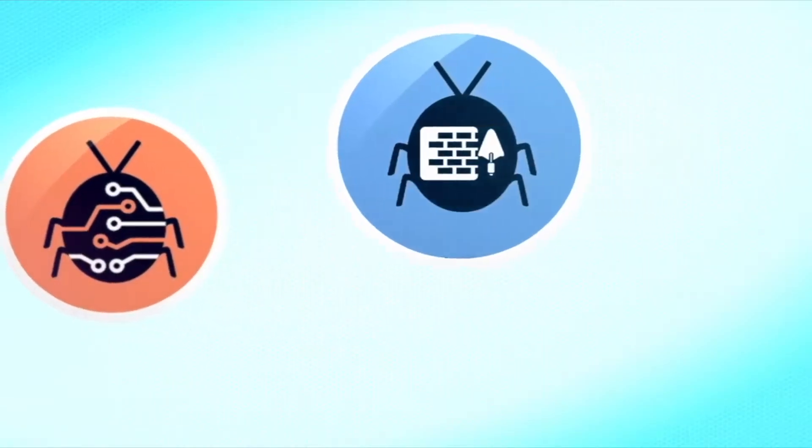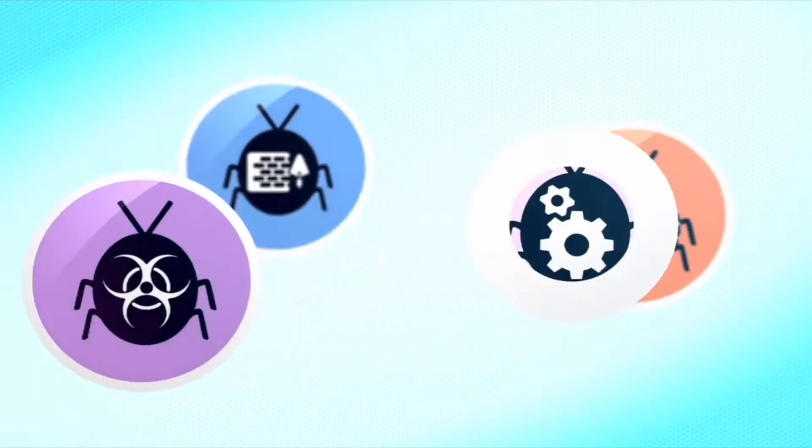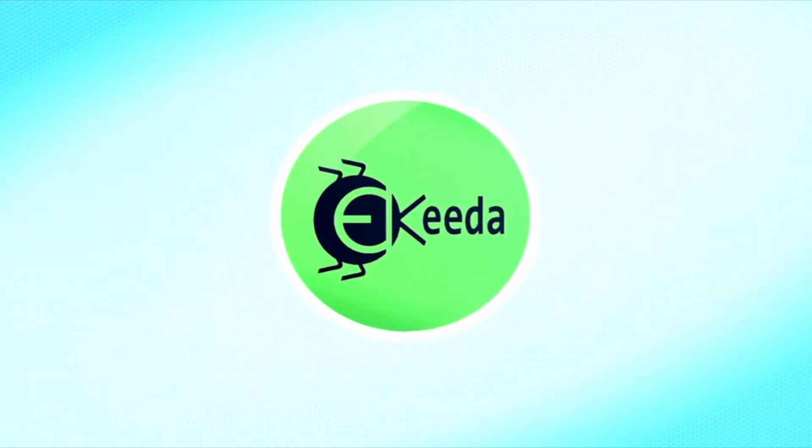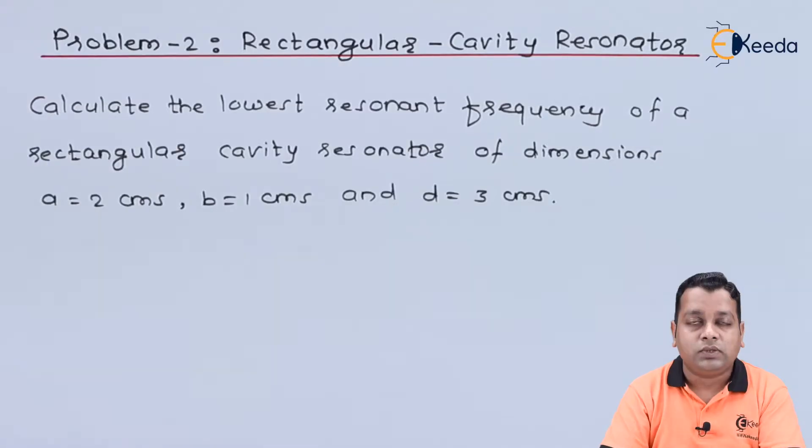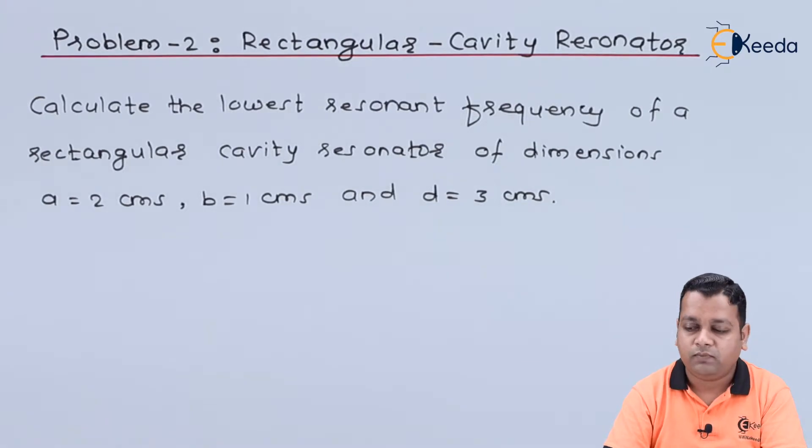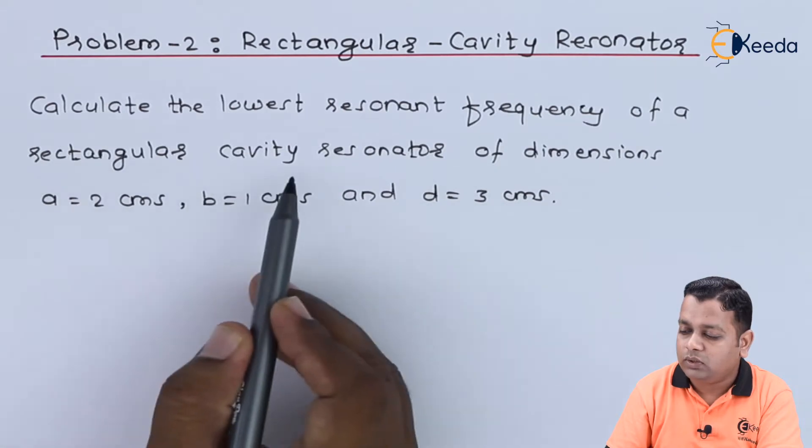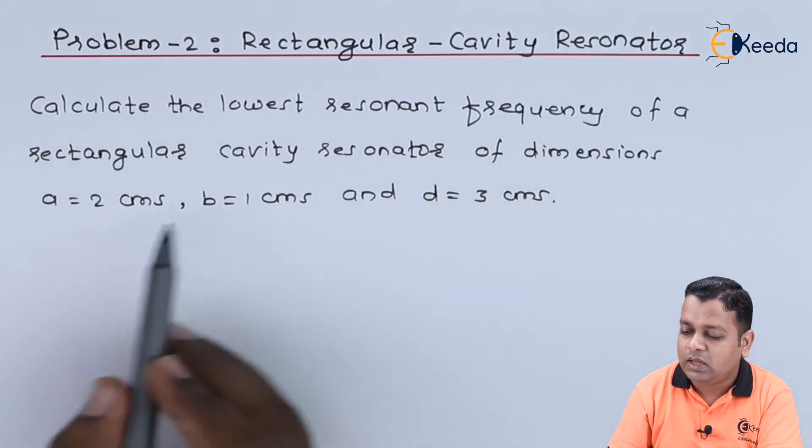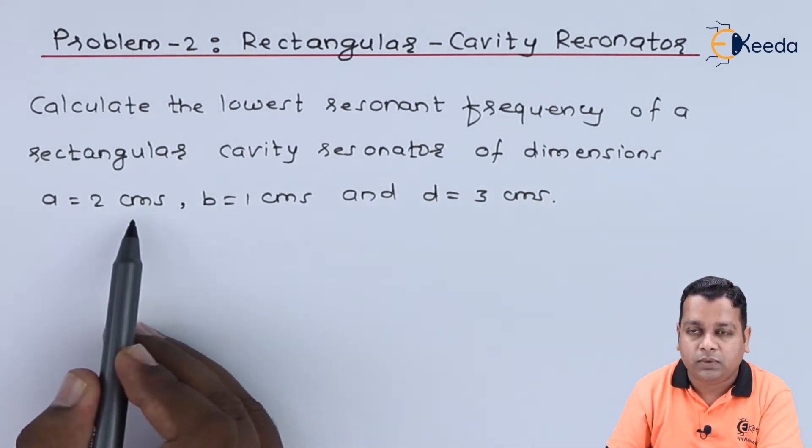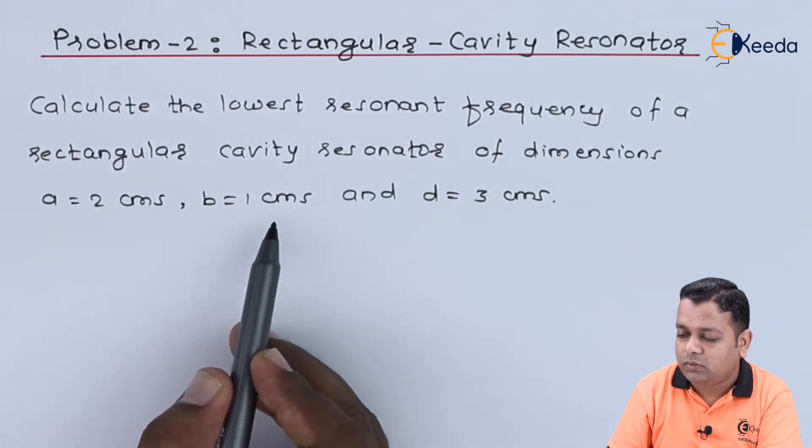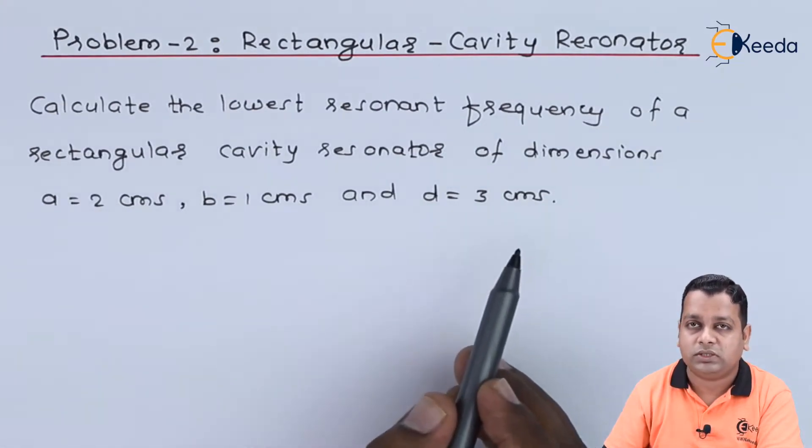Let us have one more problem. Calculate the lowest resonant frequency of a rectangular cavity resonator of dimensions: a equals 2 centimeters, b equals 1 centimeter, and d equals 3 centimeters.